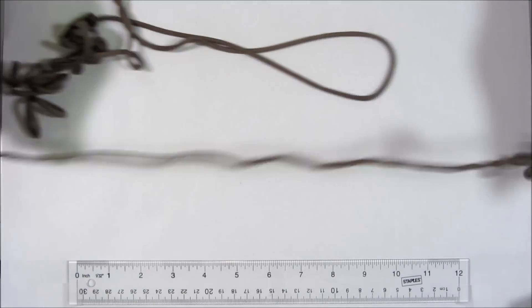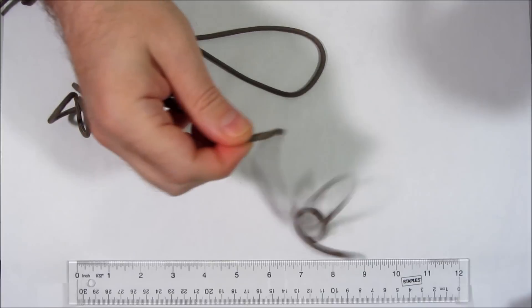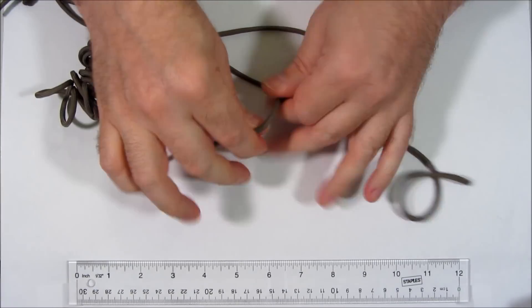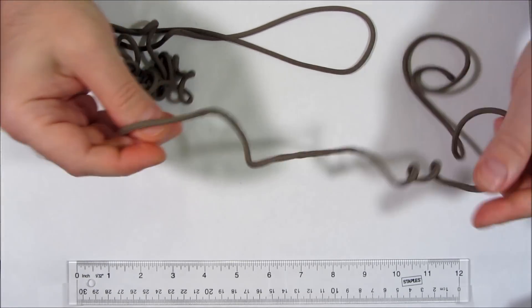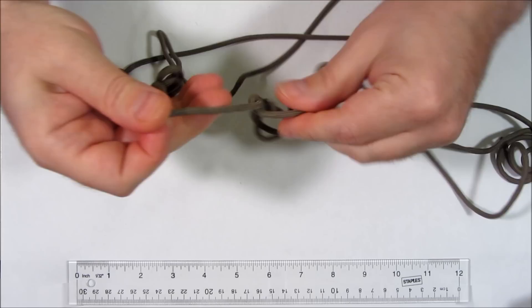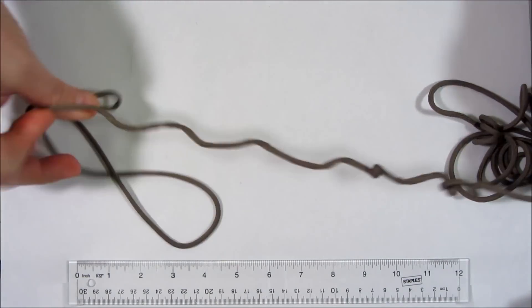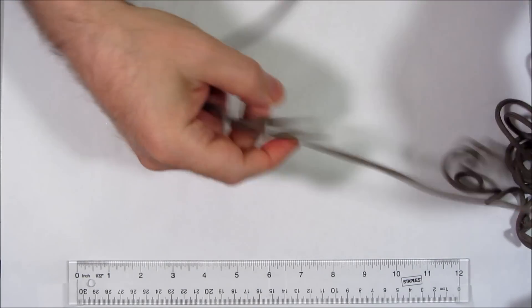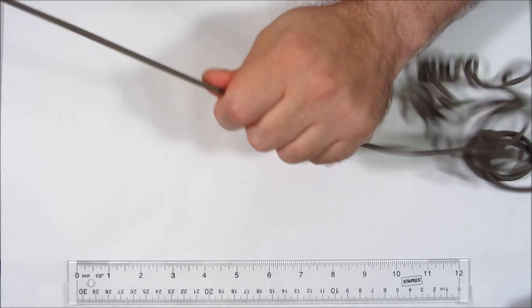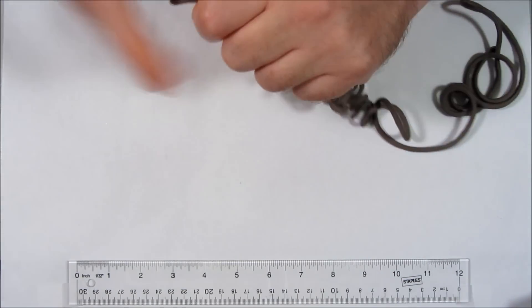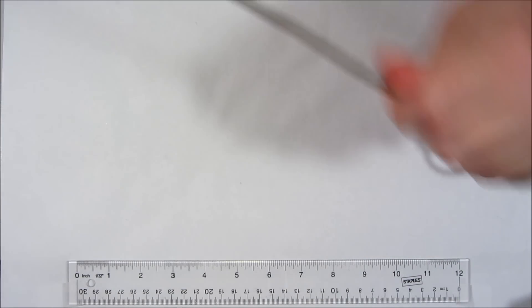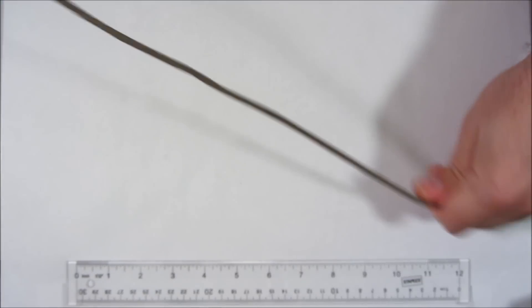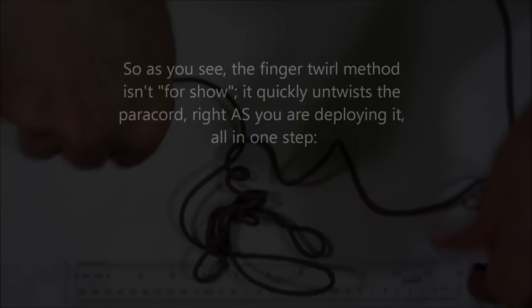You can undo it pretty quickly. However, the advantage of the finger swirl method that I've come up with is that it completely undoes this as you deploy the rope. So it's a one-step process. Whereas with this, you have to bit by bit undo it, and this takes much longer.